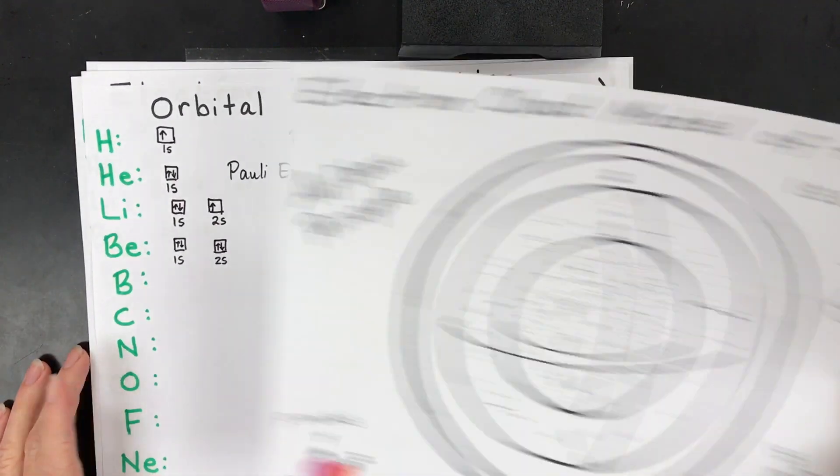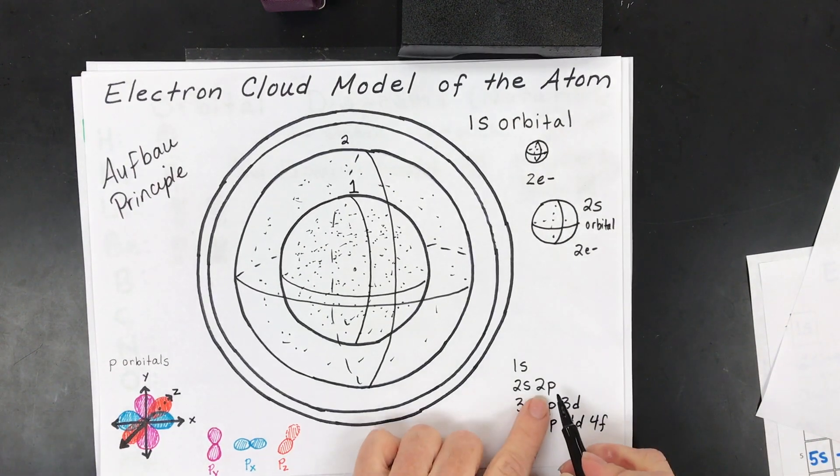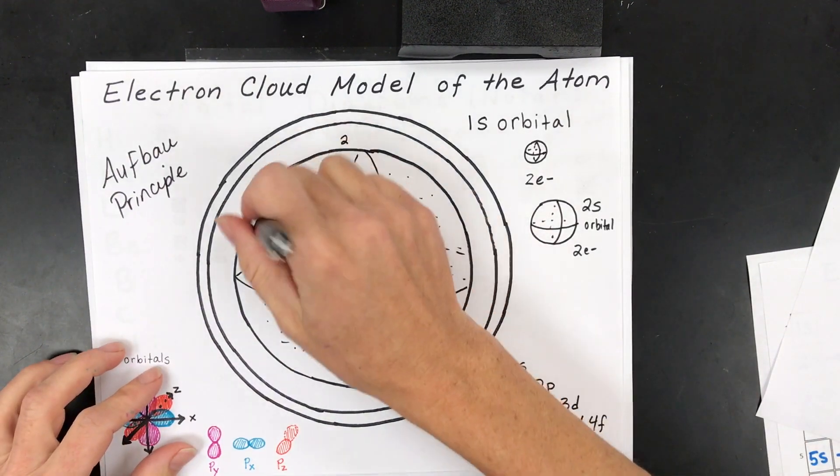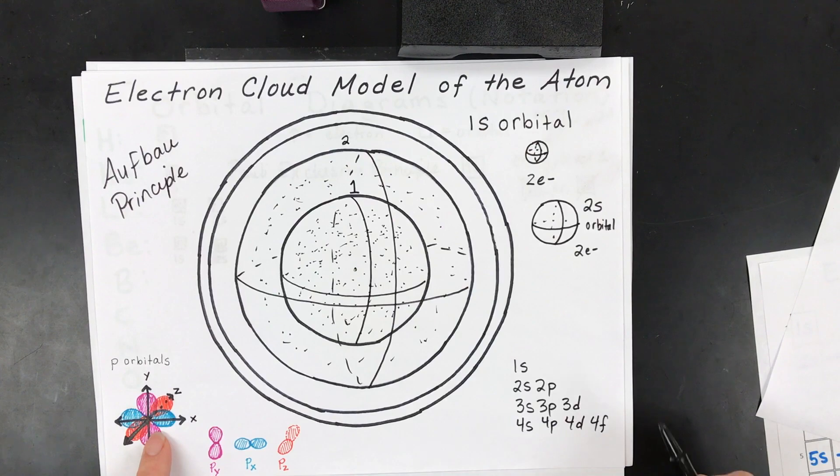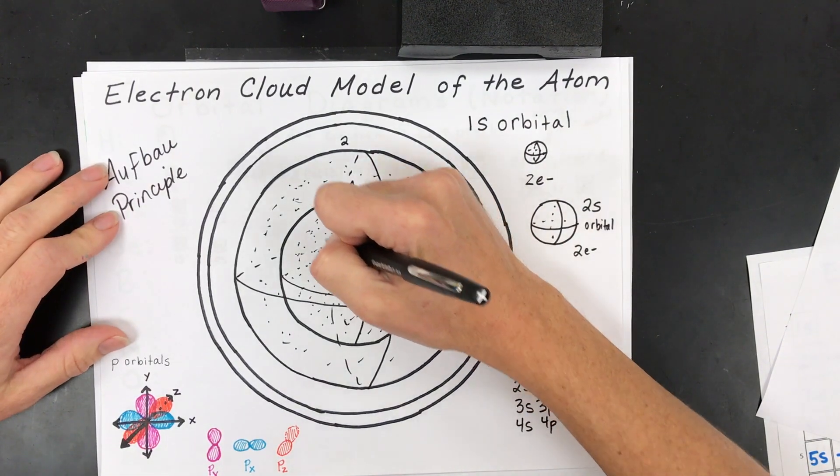This is what aufbau really means - to build up. There is now no more space in this energy level 2 making this spherical orbital. So now we're on to these p-orbitals. And what a p-orbital does is it looks like this.